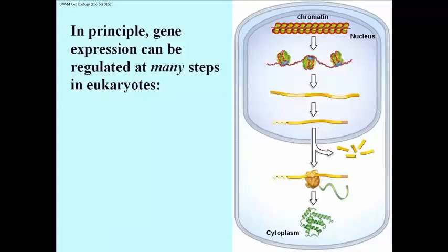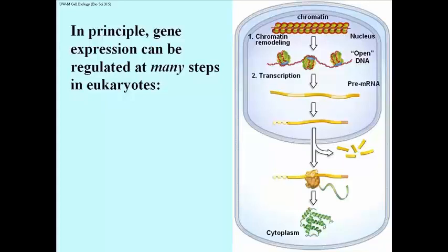There is a complex series of events that a eukaryotic cell must go through to produce a messenger RNA, and at every step of the way you can have some aspect of gene regulation. Chromatin remodeling, going from heterochromatin to euchromatin, involves a number of discrete chemical steps. If you could control those steps — for example, control the acetylation or phosphorylation of histones — you could control whether genes are active or inactive in the vicinity of those histones.